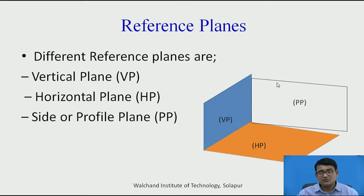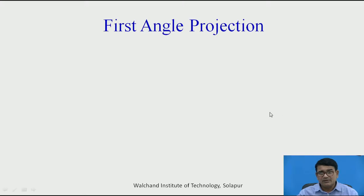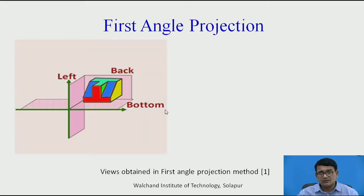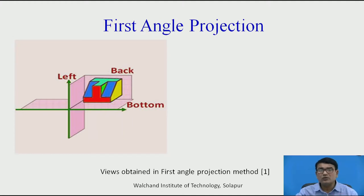One more plane is the side or profile plane. When the vertical plane and horizontal plane intersect each other, you get four quadrants: first quadrant, second quadrant, third quadrant, and fourth quadrant. When drawing orthographic projections, there are two methods: the first angle projection method and the third angle projection method.